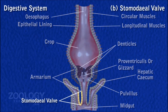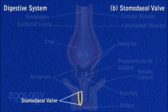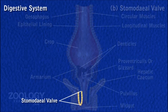Stomodial Valve. Behind the pads, the posterior end of the gizzard extends into the lumen of the mid-gut as a spout-like narrow tube. The stomodial valve folds back on itself and is thus double-walled. The stomodial valve prevents regurgitation of food from the mid-gut into the gizzard.